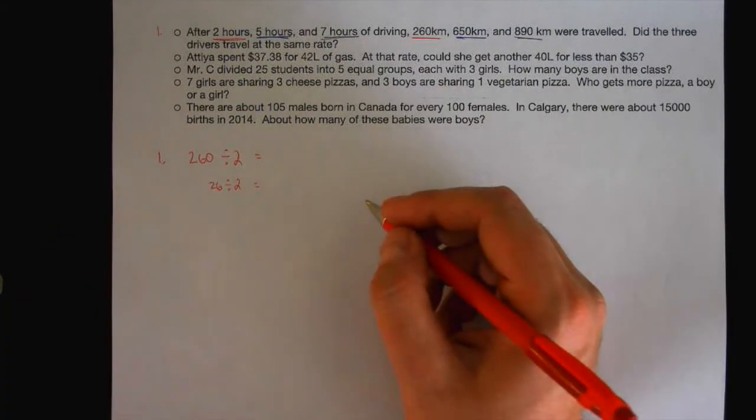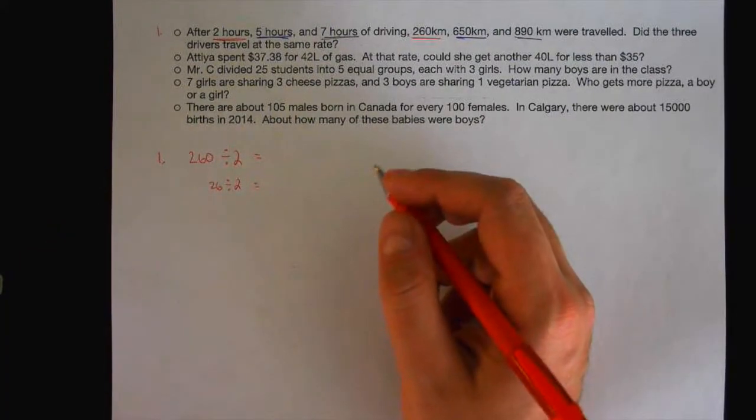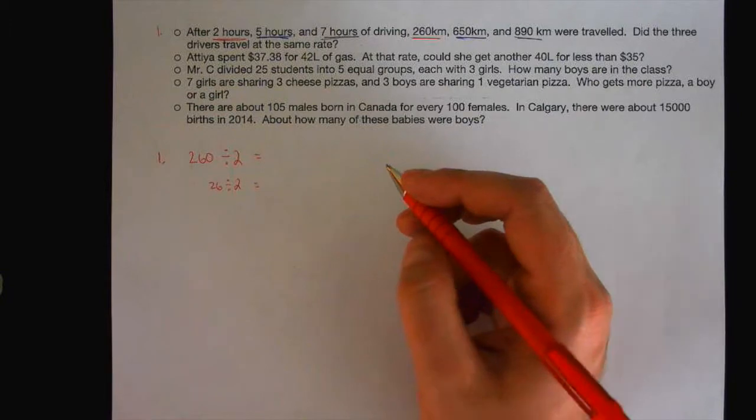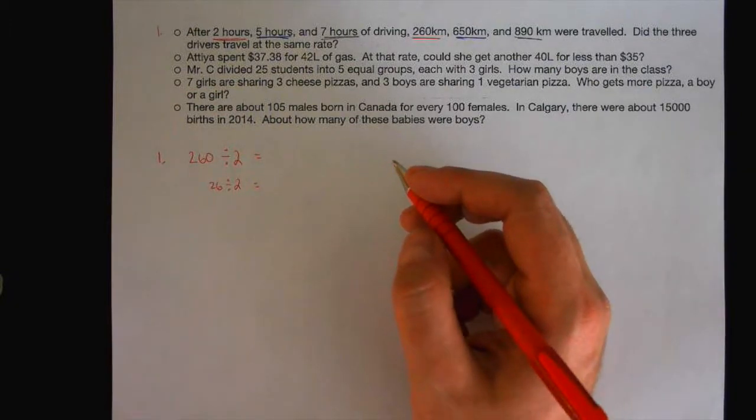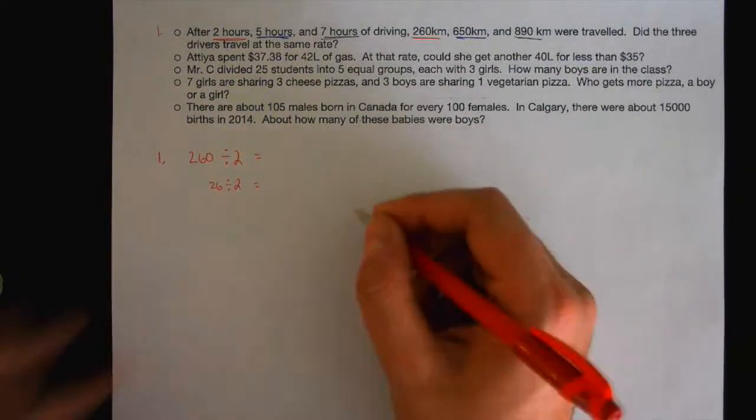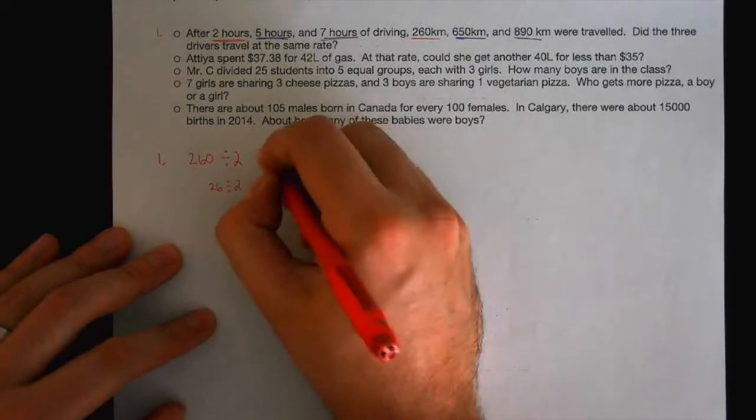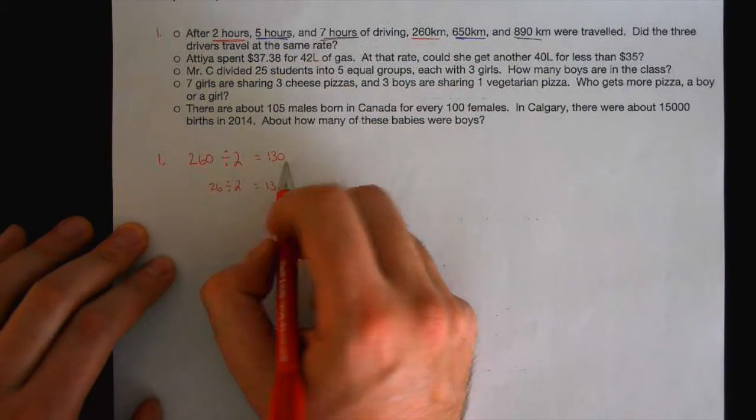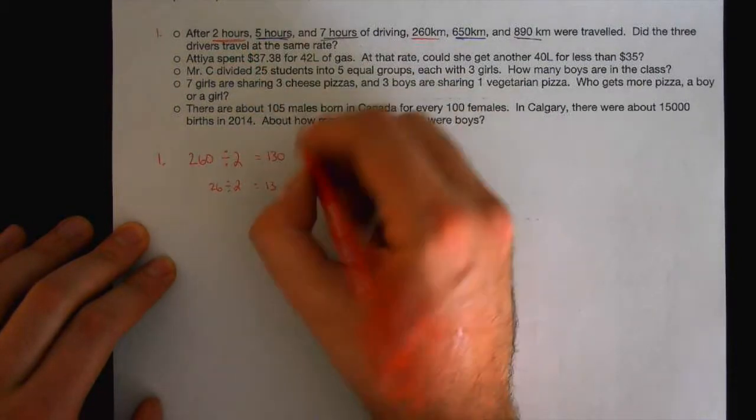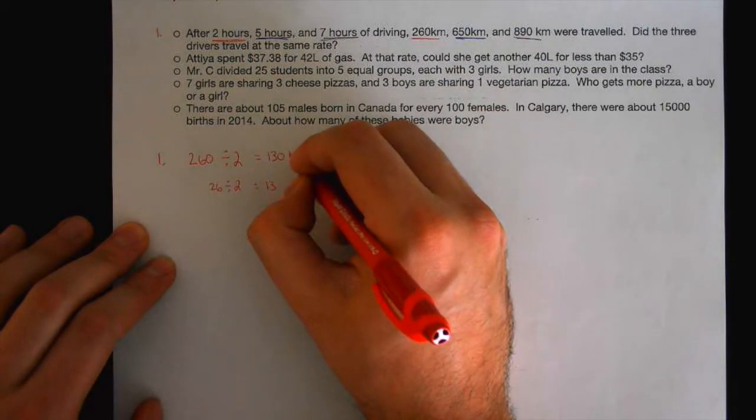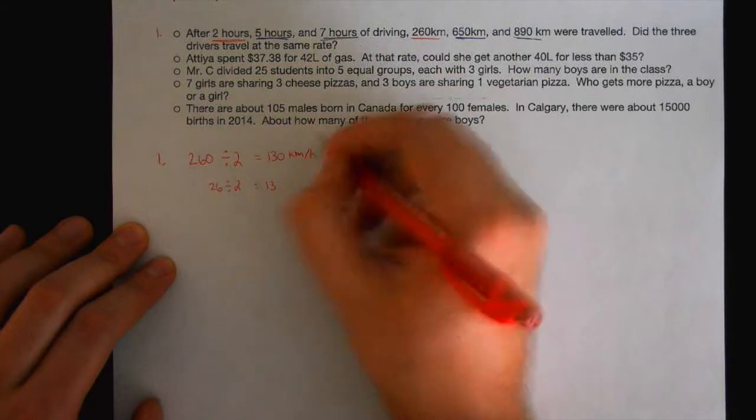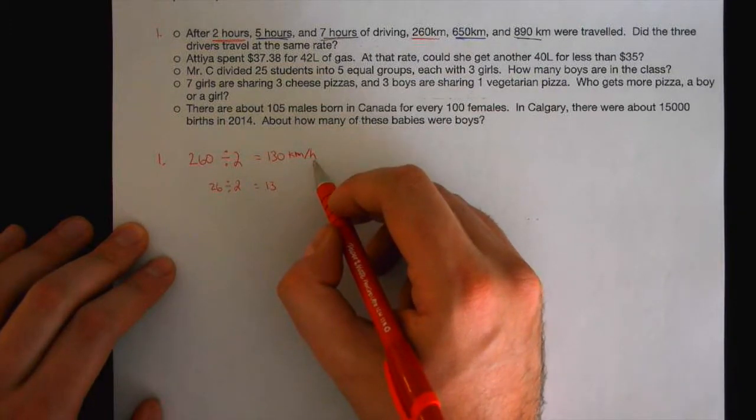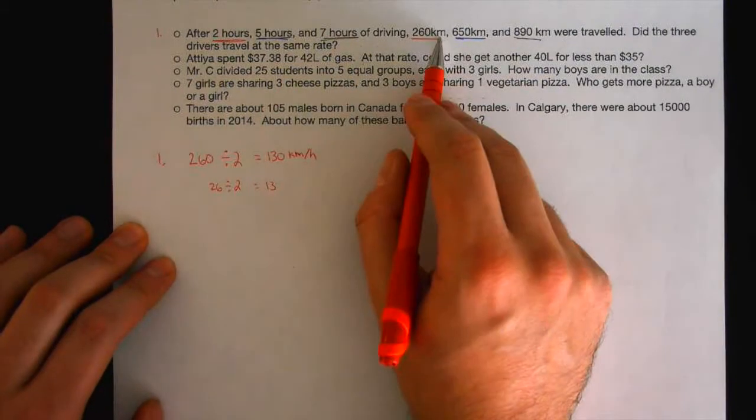If you have 26 cookies and you give them to two students equally, how many cookies does each student get? They get 13. So if this is 13, this has to be 130. We just reintroduced the zero back. So driver number one travels 130 kilometers per hour. And that slash means per hour.